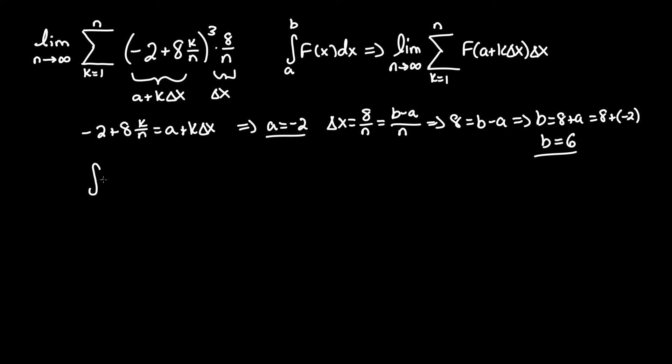Now we have our boundaries. So integral between negative 2 and 6 of some function f of x now dx. We can count f of x as everything that's being multiplied by delta x which we already know is 8 over n. So it would generally take the form of some mystery value cubed where we can just call that x cubed dx. And that's our answer.